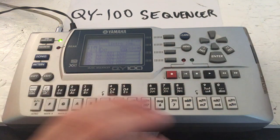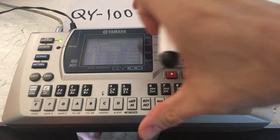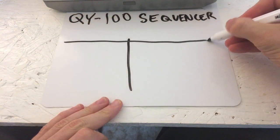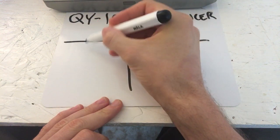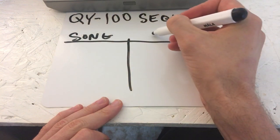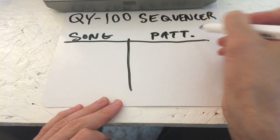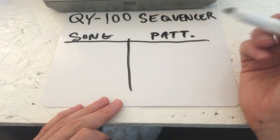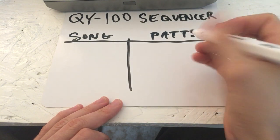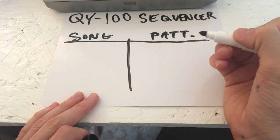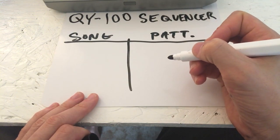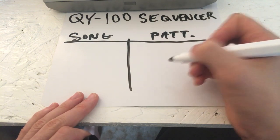To give you a quick breakdown: you can think of the machine as divided into two parts — two main modes. One is song mode and one is pattern mode. If you're familiar with the MOXF or the Motif sequencers, it's the same sort of setup. The newer ones, the MOXF and the Motif, are much more full-featured, but it's pretty much the same idea.